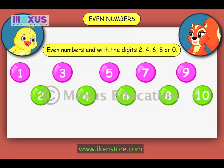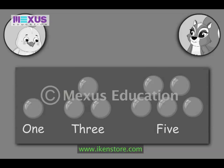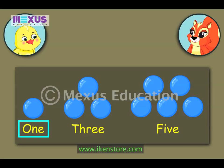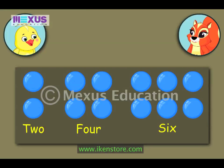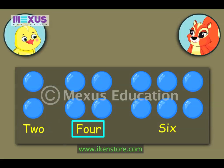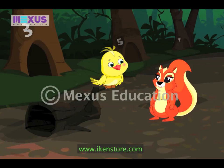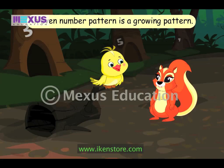You get even numbers by counting in twos from 2. Even numbers end with the digit 2, 4, 6, 8, or 0. In this pattern, the size of each number is greater than the previous number — the pattern keeps on growing. So both odd and even number patterns are types of growing patterns.